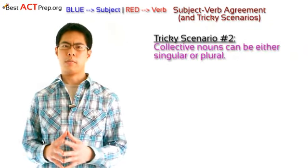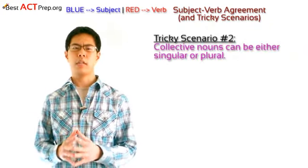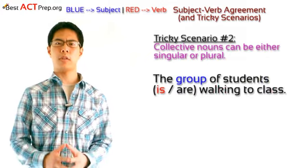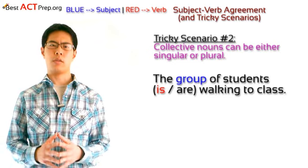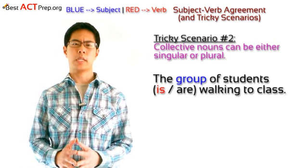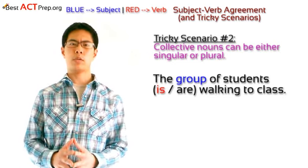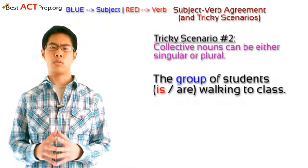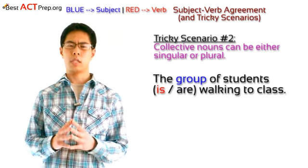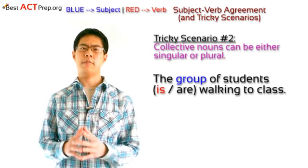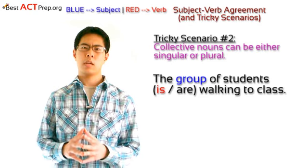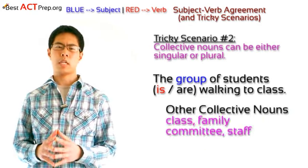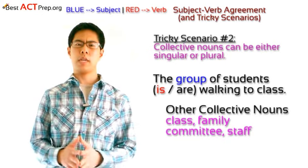Tricky scenario number two: collective nouns can be either singular or plural. Take a look at the following example: 'The group of students is or are walking to class.' Here, 'group' is the subject and group is singular, so we should match with the verb 'is.' But the problem is it can be easy to get confused because the word 'group' looks like it should be plural since a group consists of more than one thing. There are several other words like 'group' that usually take singular verbs, such as class, family, committee, and staff.